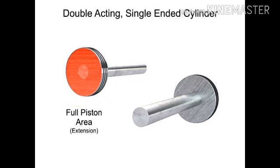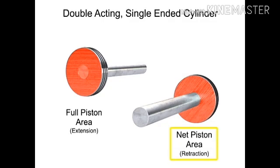The next significant working area is called the net area. This area is the size of the full piston area minus the area of the rod. The net area feels pressure when the cylinder retracts.